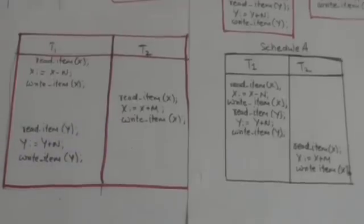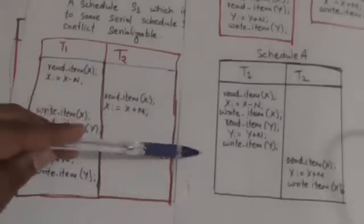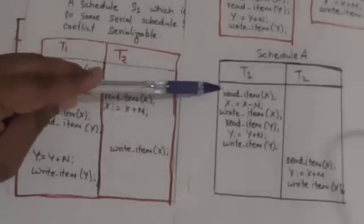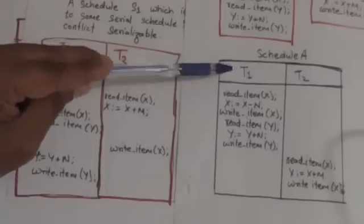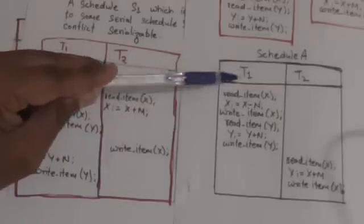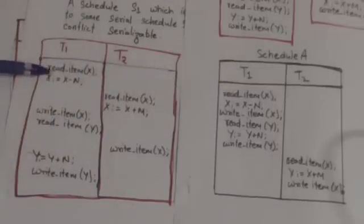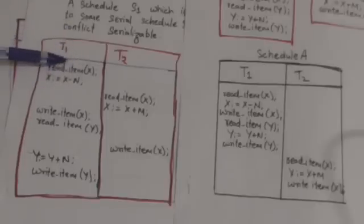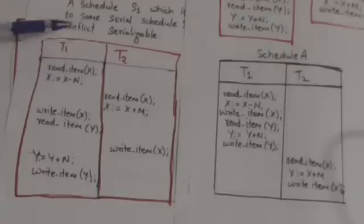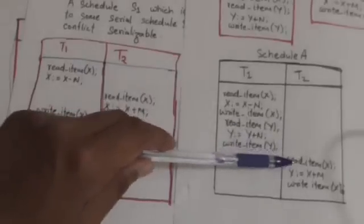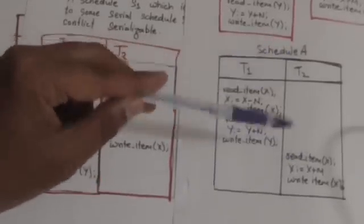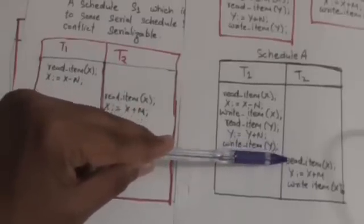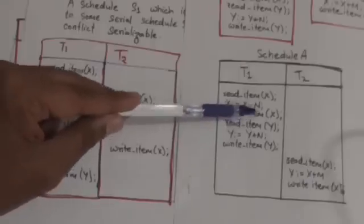Now see these two schedules. In this schedule, the read operation of transaction T1 reads the value of X that was in the database before the schedule started. Here also, the read operation of transaction T1 reads that value of X which was in the database before the schedule started. Now, this read operation of transaction T2 in this schedule reads the value of X which has been written by transaction T1.